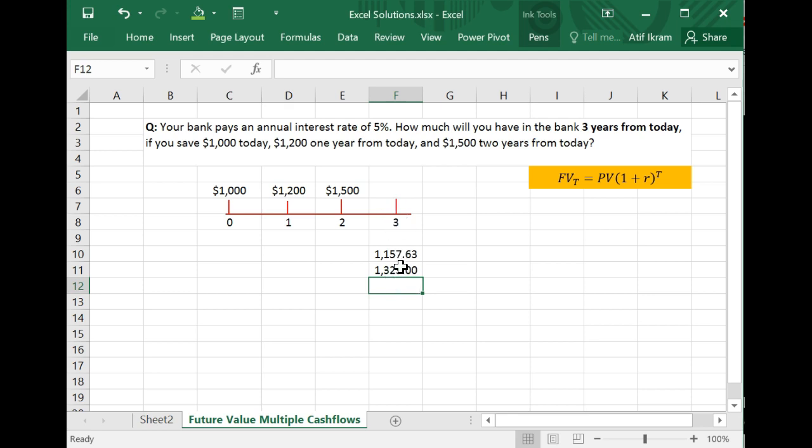So now maybe you're getting the gist of it. The last is the $1,500 that you're going to deposit, which is only going to grow out for one year. And so you'll just say the rate is still 0.05. I'm going one year out into the future.